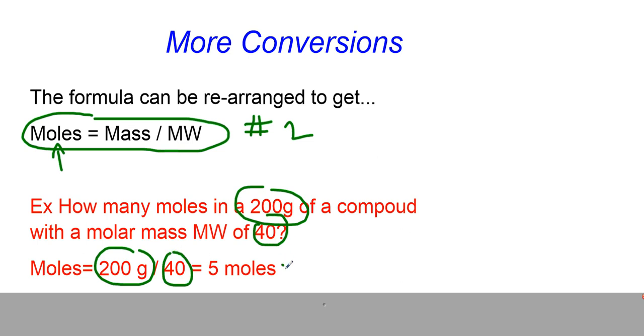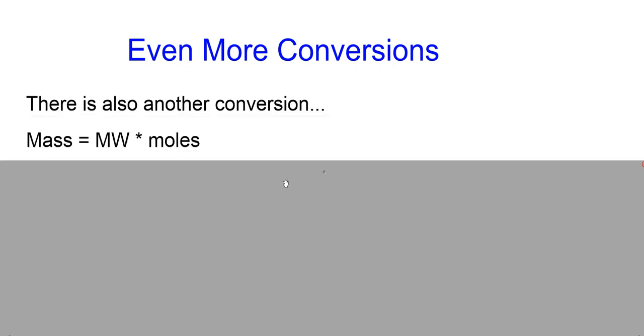So that's 200 divided by 40, which must mean I had 5 moles of this unknown compound. But there's a third way we could rearrange this compound. The third way is let's use mass as the unknown. So mass equals the molar mass times the number of moles. Let's call that equation number 3.